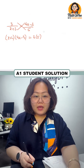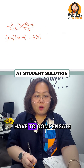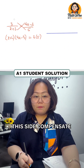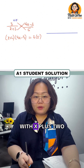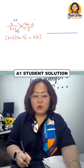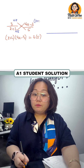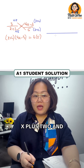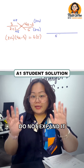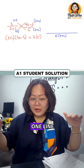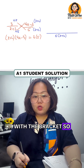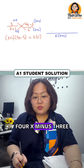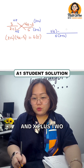Put it as a single fraction. The first term must be compensated by multiplying by 5, and the second term compensated by (x + 2). The denominator is 5(x + 2). For the numerator, do not expand it yet — put it in one line with brackets: 3(5) minus (4x − 3)(x + 2).